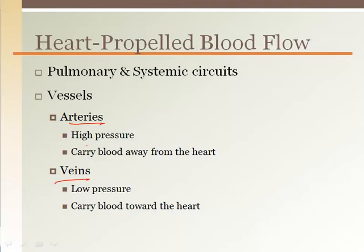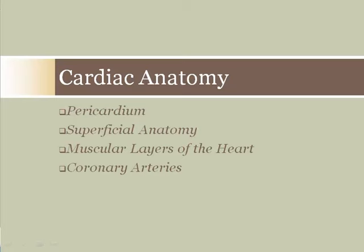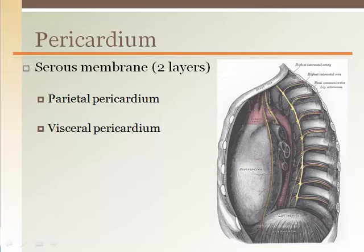Vessels that extend from the heart are either arteries or veins. Arteries are considered high pressure because they receive the blood as it is being ejected from the heart, so arteries carry blood away from the heart and out to the body's capillary beds. Veins are considered low pressure because they are returning blood back to the heart.